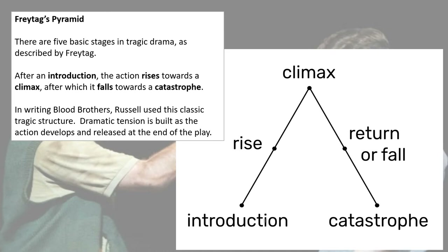In writing Blood Brothers, Russell used this classic tragic dramatic structure. It is useful to think about this as a building and releasing of dramatic tension — as things reach the climax there is a building up of dramatic tension, and then in the second half, as we return towards the catastrophe, there is a release of dramatic tension. It's a very useful concept for explaining the way that Blood Brothers works.